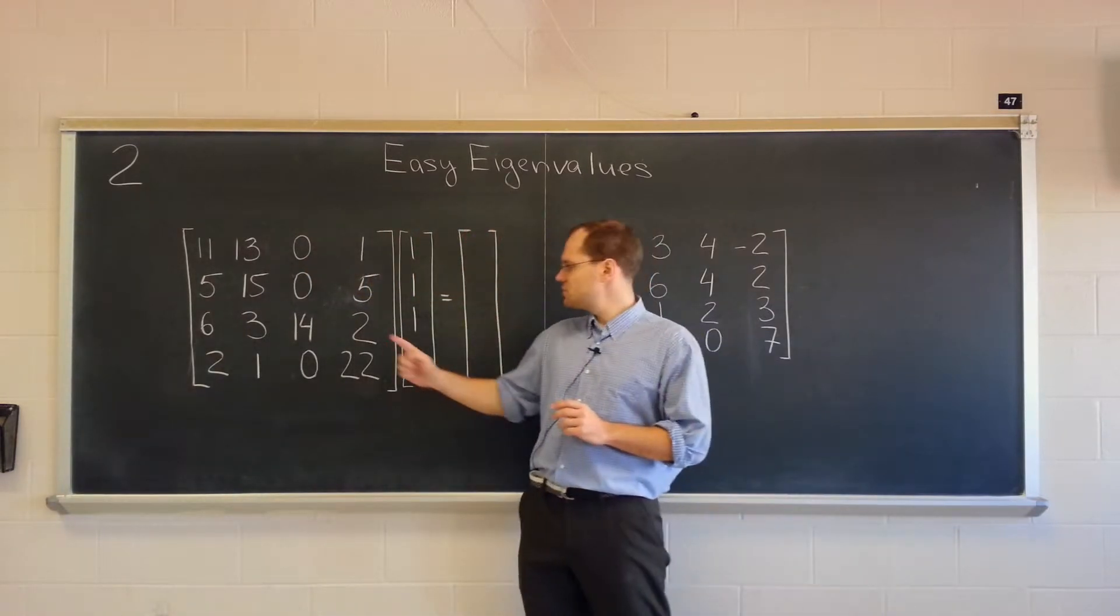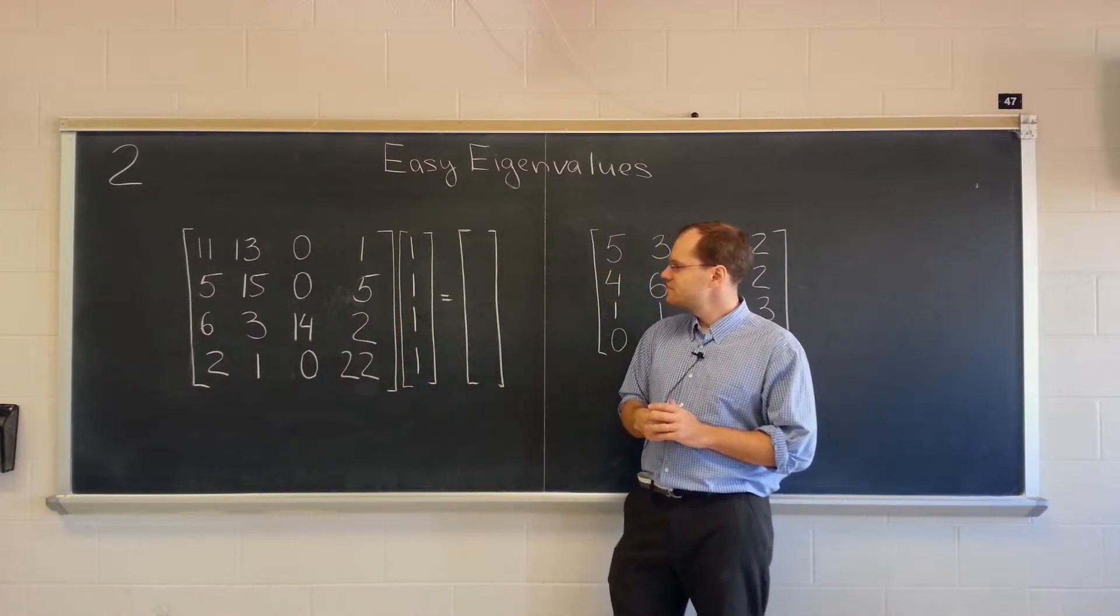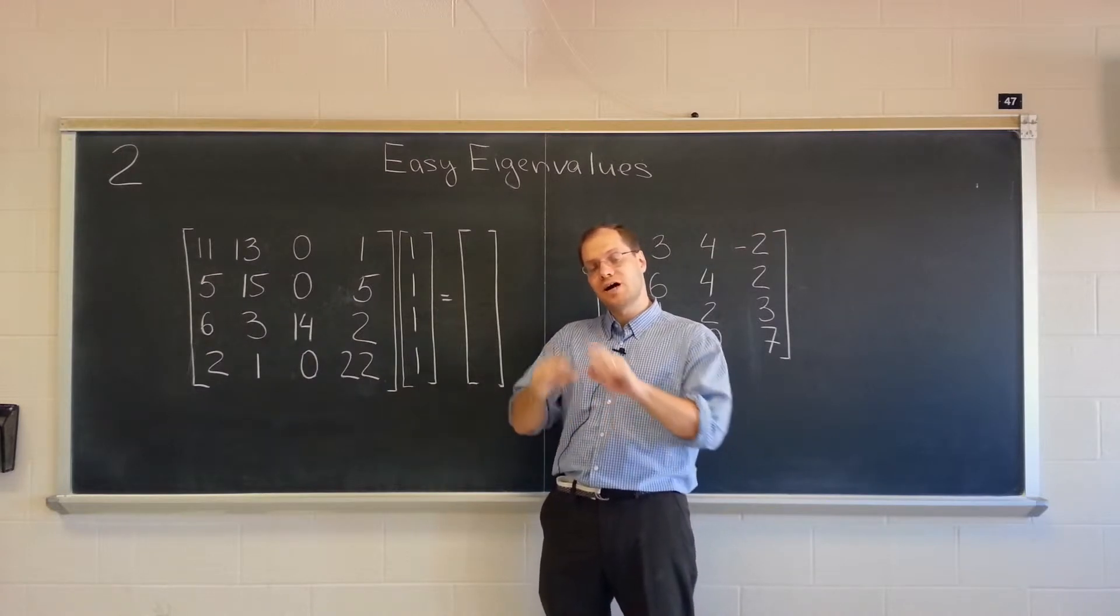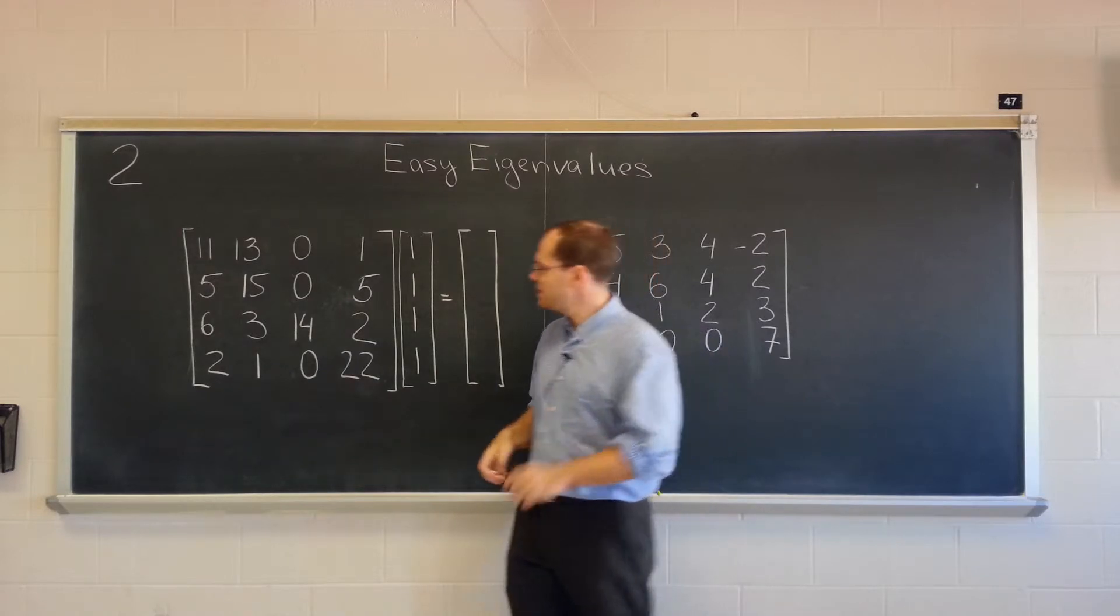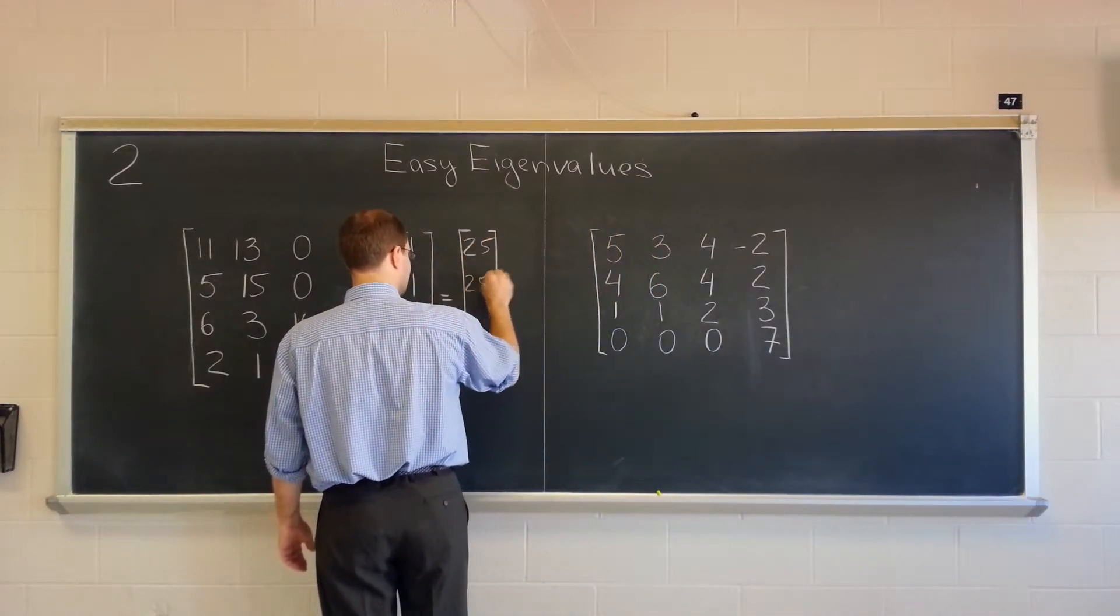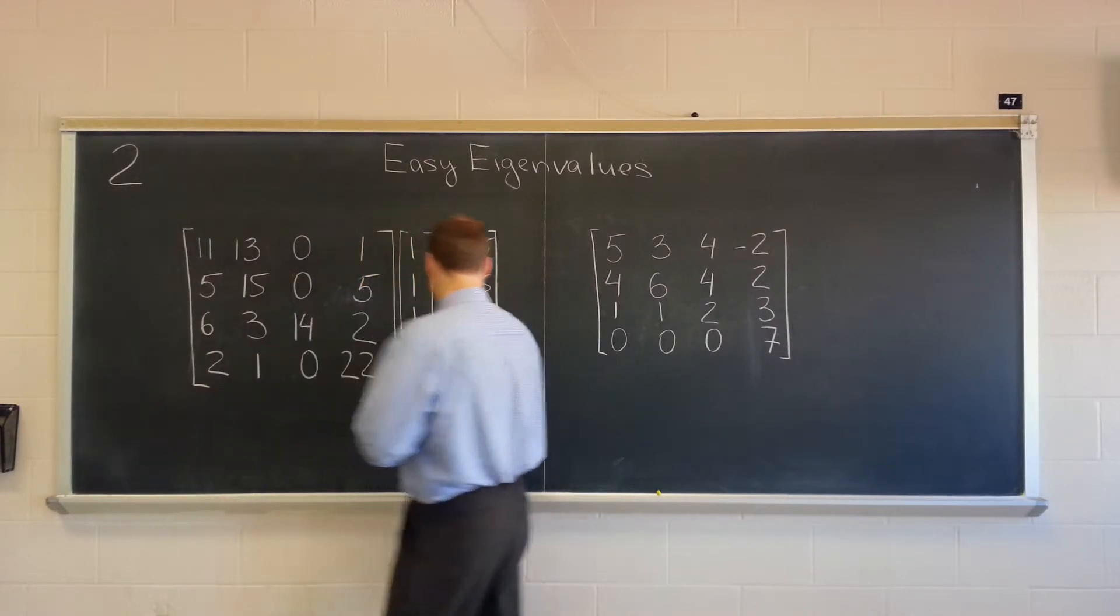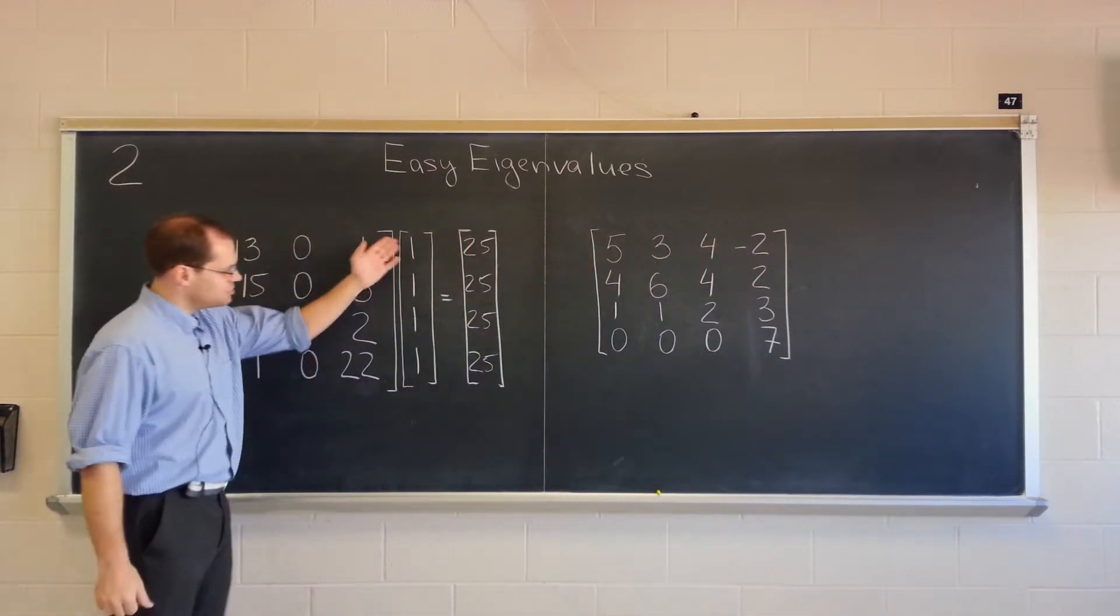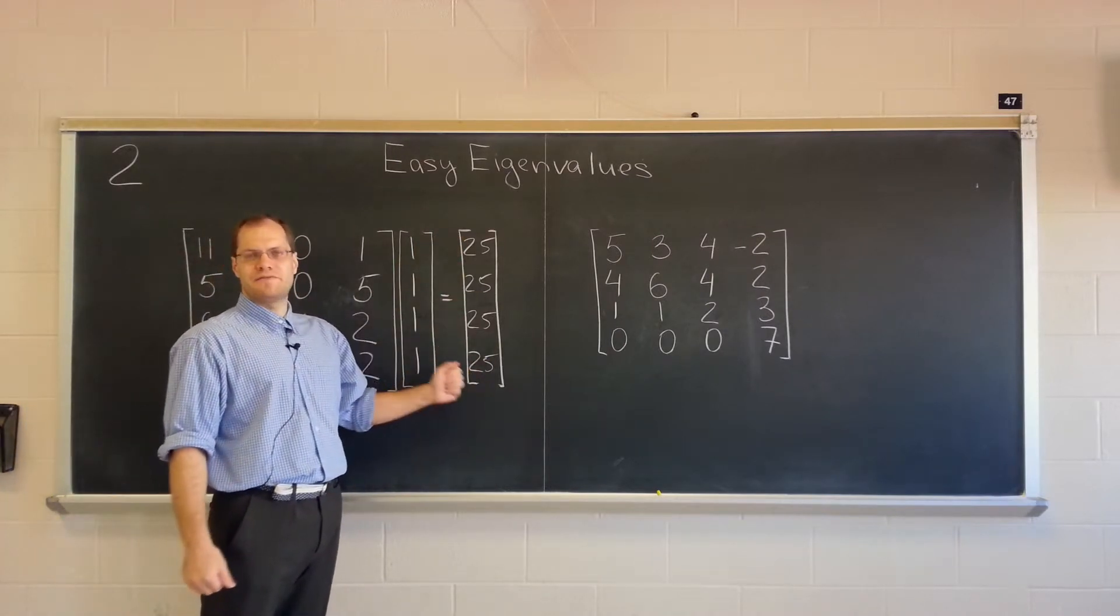Think about what happens when you multiply. What's the result of multiplying this matrix by this vector? This vector will add the four columns together. Adding the four columns means adding up each row for each of the entries. So the answer will be 25, 25 because the second row adds up to 25, 25 and 25. Each row adds up to 25, so the result of multiplying this matrix by a column of all ones results in a column of all 25s.